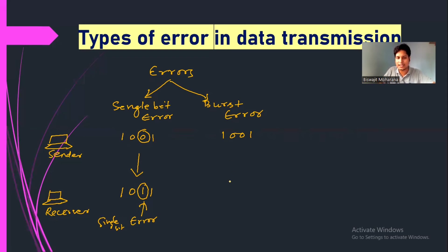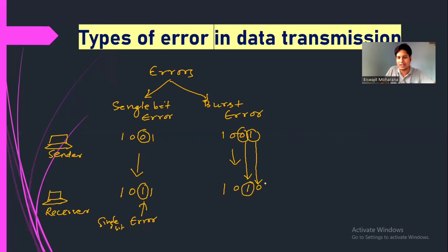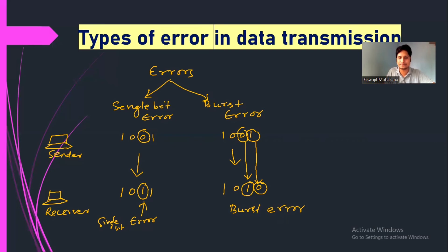In case of burst error, suppose 1001 has been sent by the sender but the receiver receives 1010. Here you see that this zero has been changed to one, and again this one has been changed to zero — meaning the error occurs in more than one bit. If error occurs in more than one bit, that type of error is known as burst error.